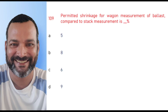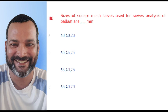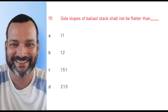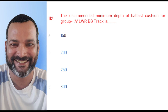Permitted shrinkage for wagon measurement of ballast compared to a stack measurement is 8%. The sizes of square mesh sieves used for sieve analysis of ballast are 65 mm, 40 mm, and 20 mm. Side slope of a ballast stack shall not be flatter than 1.5 is to 1.